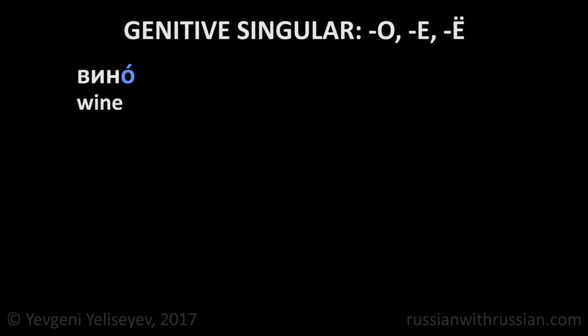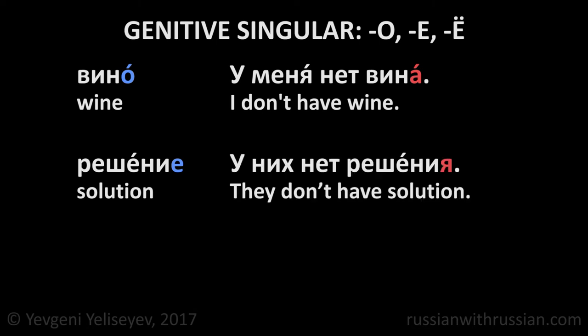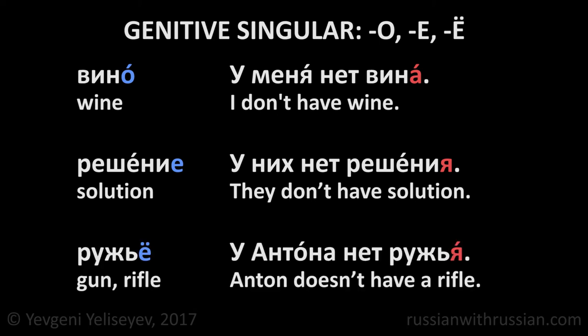Nouns ending in О, Е, Ё: Вино — wine. У меня нет вина. I don't have wine. Решение — solution. У них нет решения. They don't have a solution. Ружьё — rifle. У Антона нет ружья. Антон doesn't have a rifle.